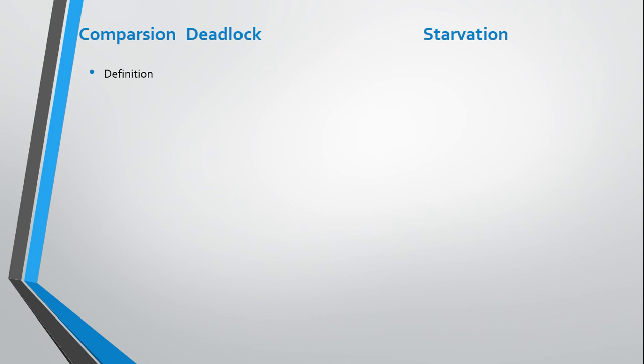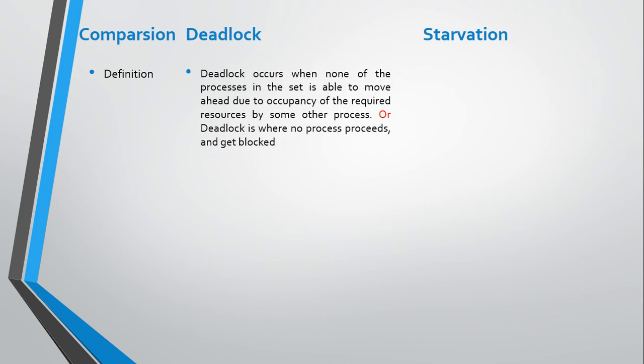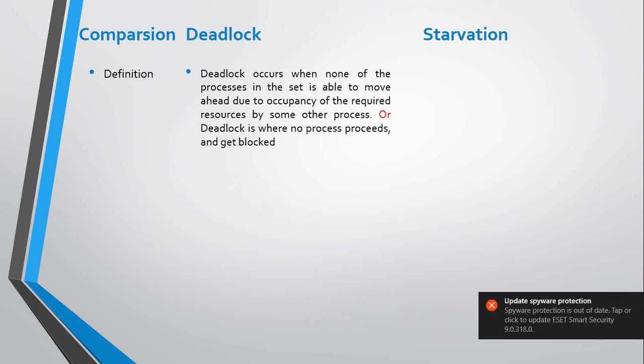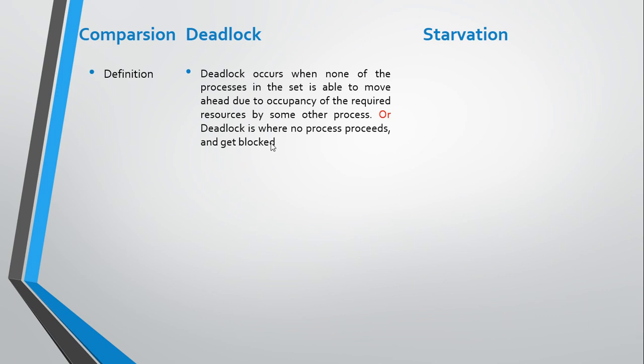First, definition. Deadlock occurs when none of the processes in the set is able to move forward due to occupancy of the required resources by some other process. Deadlock is where no process can proceed and gets blocked.